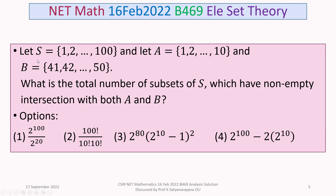So we are given S is the set consisting of the natural numbers 1 to 100, A is the set of numbers 1 to 10, and B is the set of numbers 41 to 50. We have to find the total number of subsets of S which have non-empty intersection with both A and B.